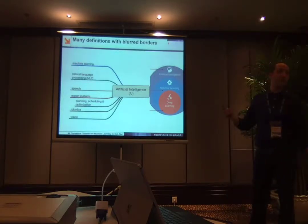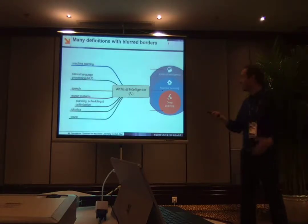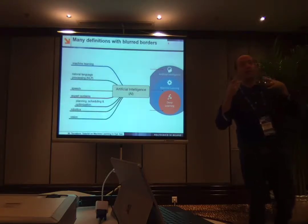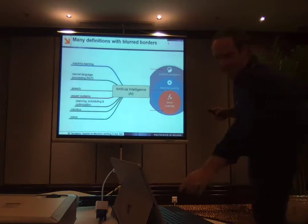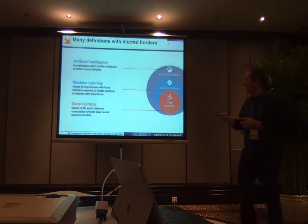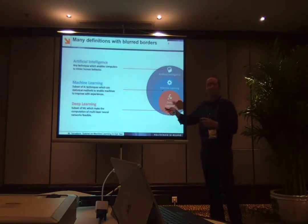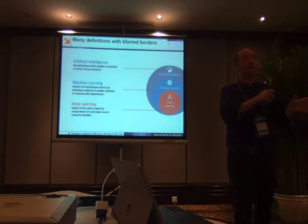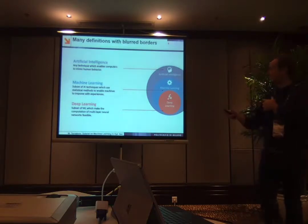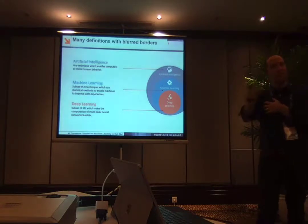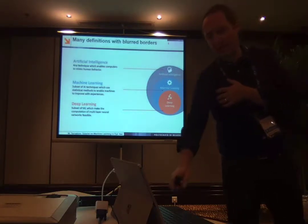Machine learning is only one of these subsets. There's also natural language processing to recognize human voice, robotics, and vision — how to recognize the content of an image. Machine learning has a specific twist in artificial intelligence, using mathematical and statistical methods to infer statistical properties of data such that we can make decisions based on those properties. Deep learning — we will understand better what it means by the end of this first part.